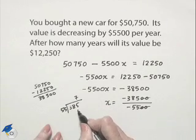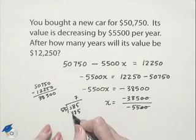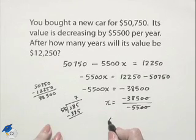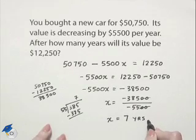Let's just double check. Seven times five is 35. Seven times five is 35, plus three is 38. Sure enough, that's an exact value, so x equals seven. So we can then determine that after seven years, the car will end up being $12,250.